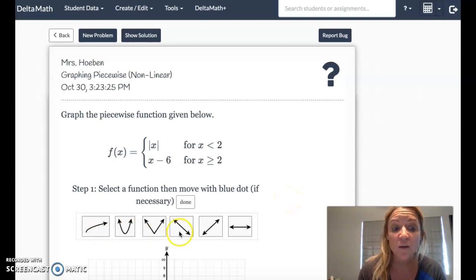If you aren't familiar with these, you can always have a second tab open with Desmos and graph what the part of the piecewise looks like, and then correctly put it into DeltaMath.